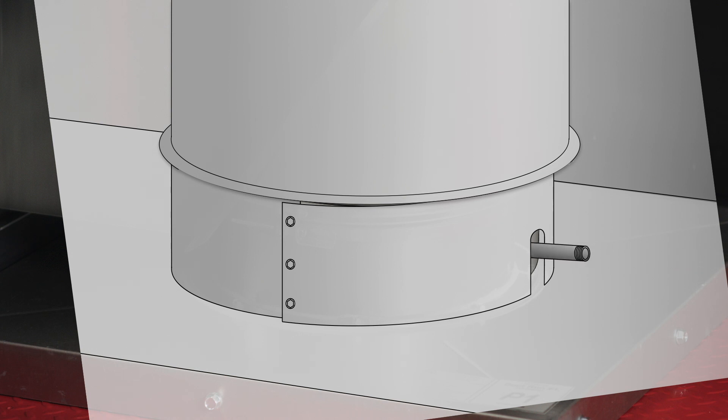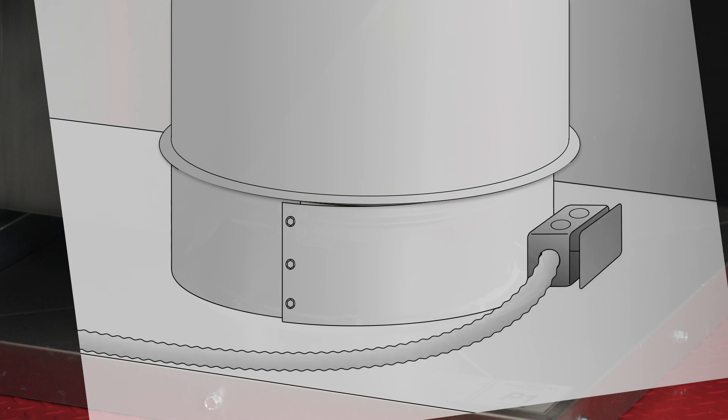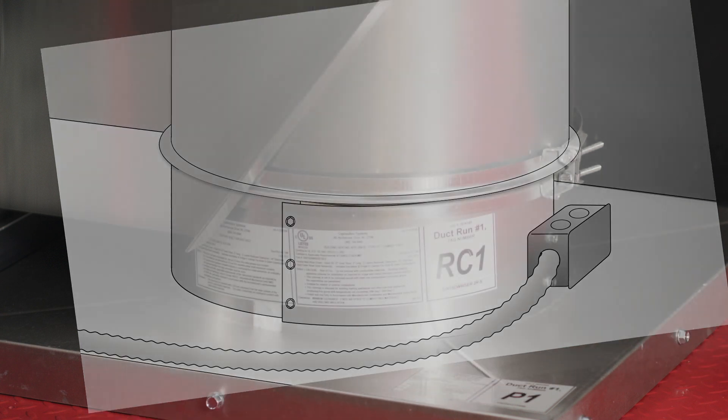When a wiring extension for the sensors is needed, install a nipple from the inner duct to a junction box just outside the riser cover, as shown. Never install a junction box inside the riser cover.